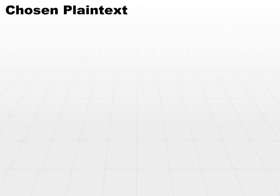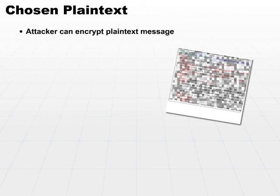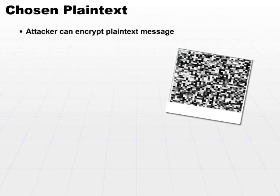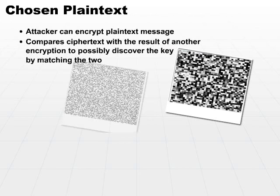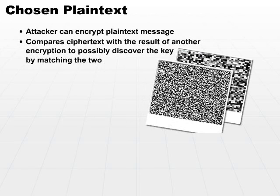Another type of attack is the chosen plain text attack. In this attack, the attacker can encrypt a plain text message, ending up with an encrypted message or ciphertext. He then compares this ciphertext with the result of another encryption to hopefully discover the key by matching the two ciphertexts up.